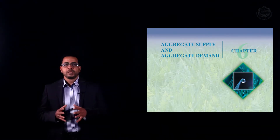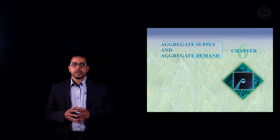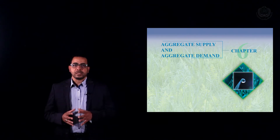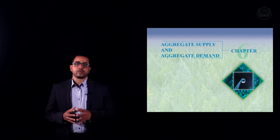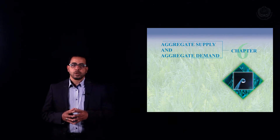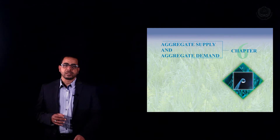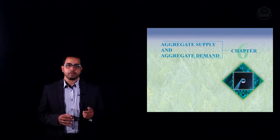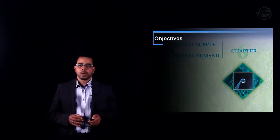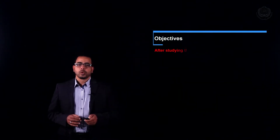Hi everyone, today we're going to talk about a theory that explains the status of the economy, especially economic fluctuation — the business cycle. We're going to talk about the aggregate supply and aggregate demand model.